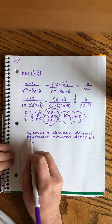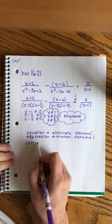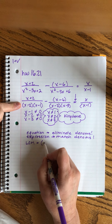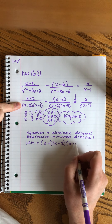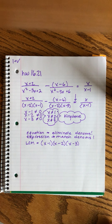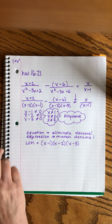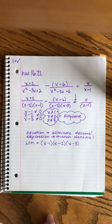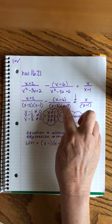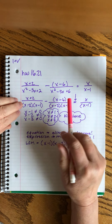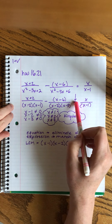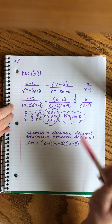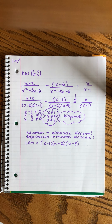In both of these strategies, though, we have to find the least common multiple. And that will be, in this case, (x − 1)(x − 2)(x − 3) — all three of these things being multiplied together. So our next step is we are going to multiply each term by the LCM, because if we just multiplied one side we'd have to distribute it. So we multiply each term by the LCM and then we'll see what happens.